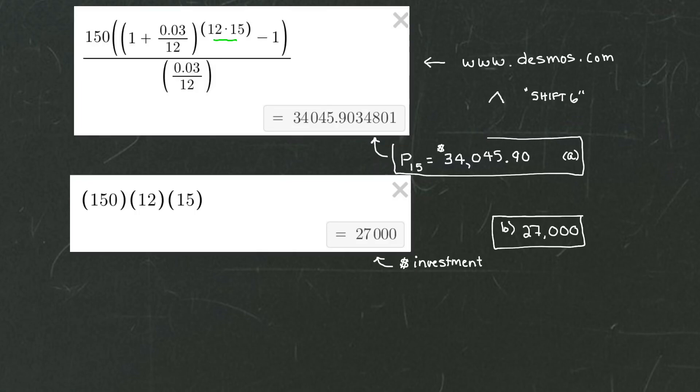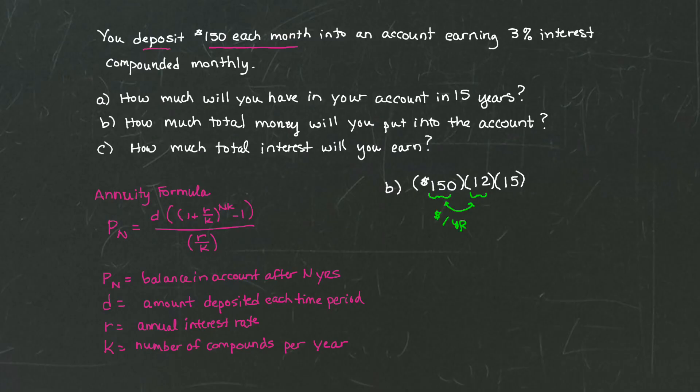Let's go on now and answer part C. Part C asks, how much total interest will you earn? So to get the total interest, what do I have to do? I have to take the money that's in my account after 15 years and subtract from it the amount of money that I actually invested. So I have to take the money that I invested and subtract that from the amount in the account and that's going to tell me how much I made as interest.